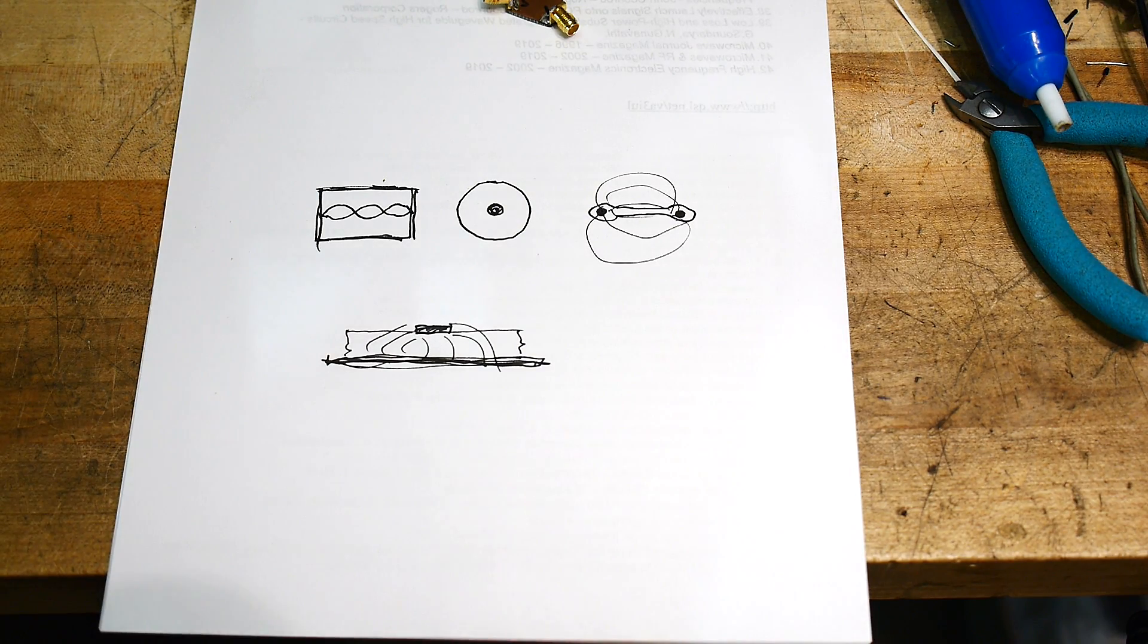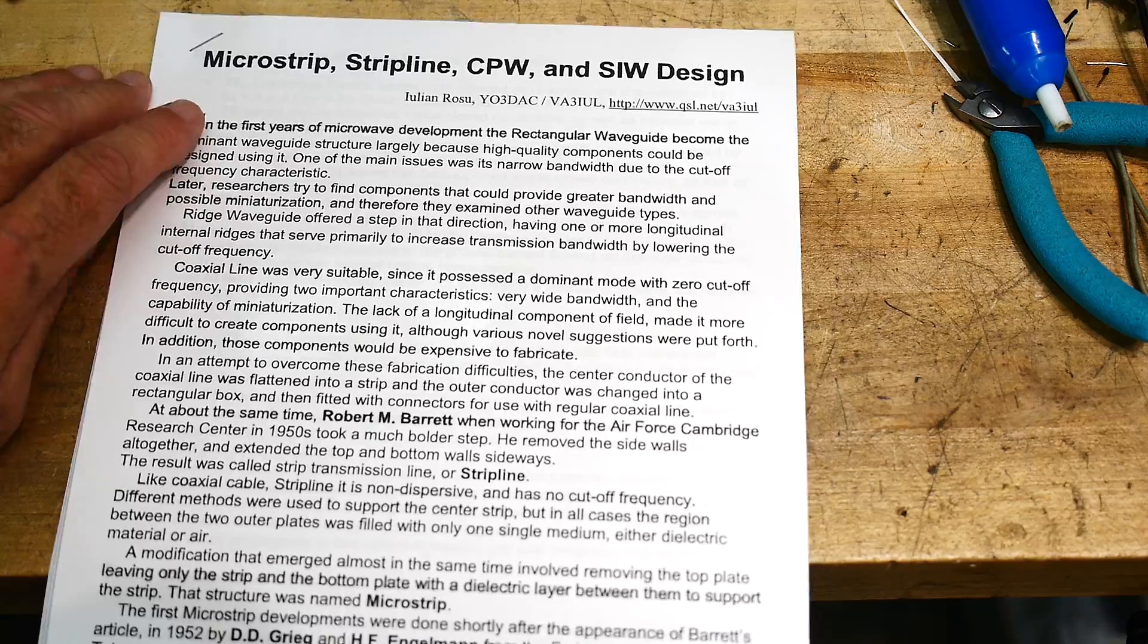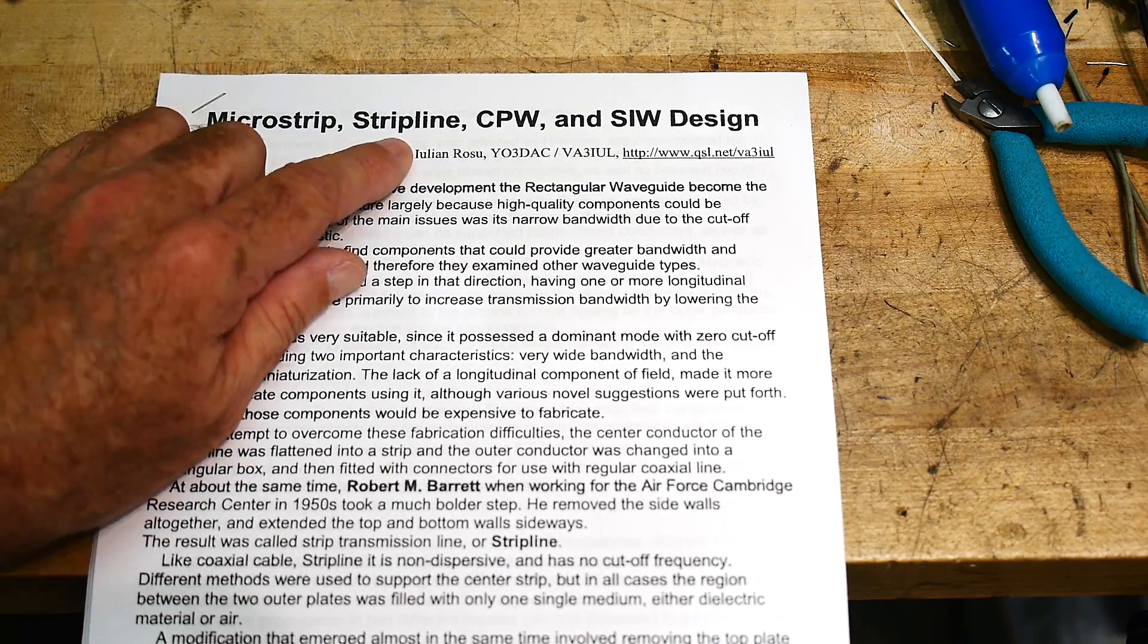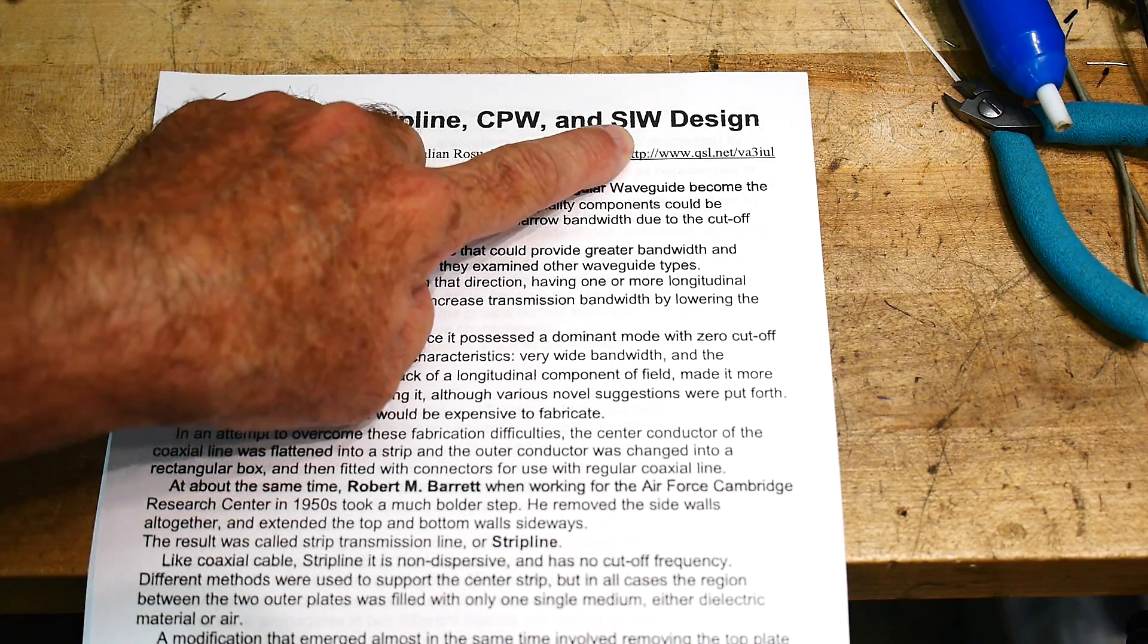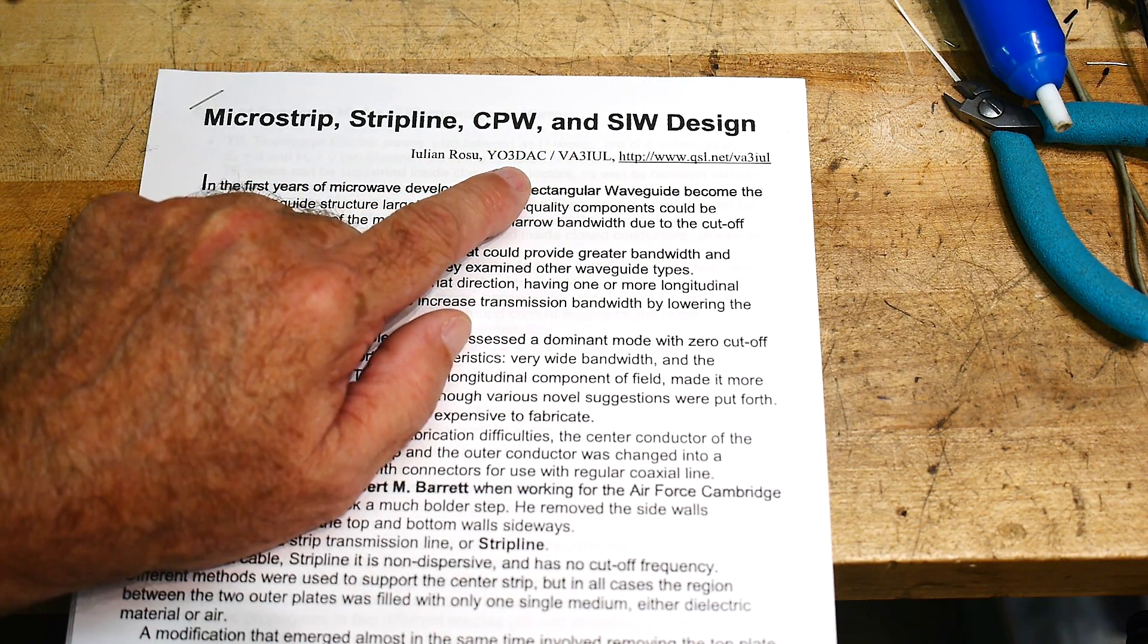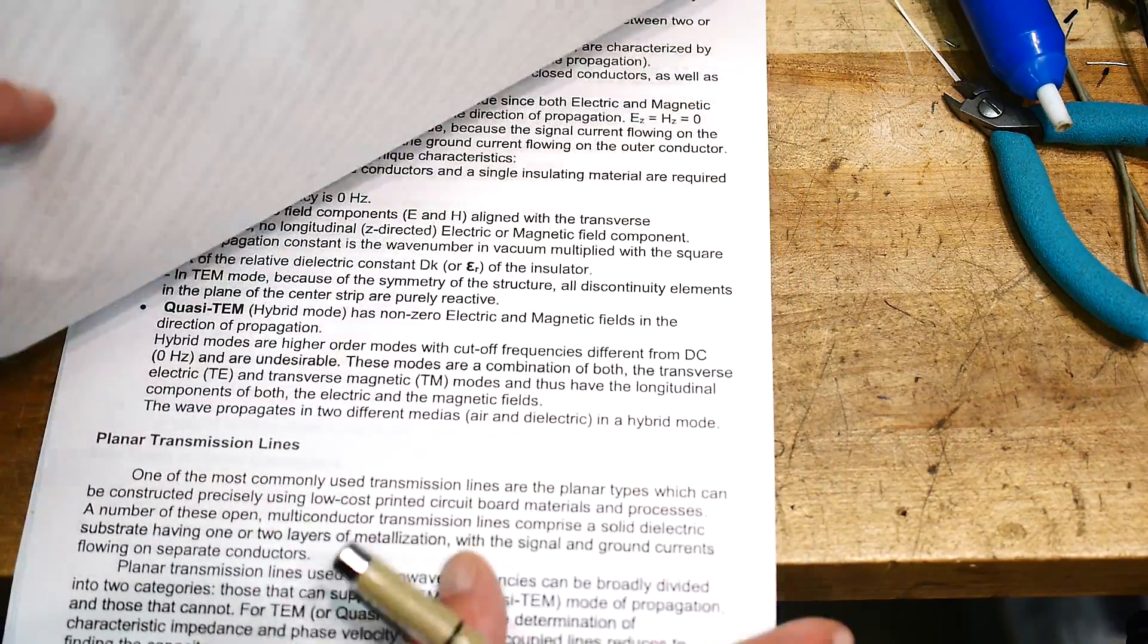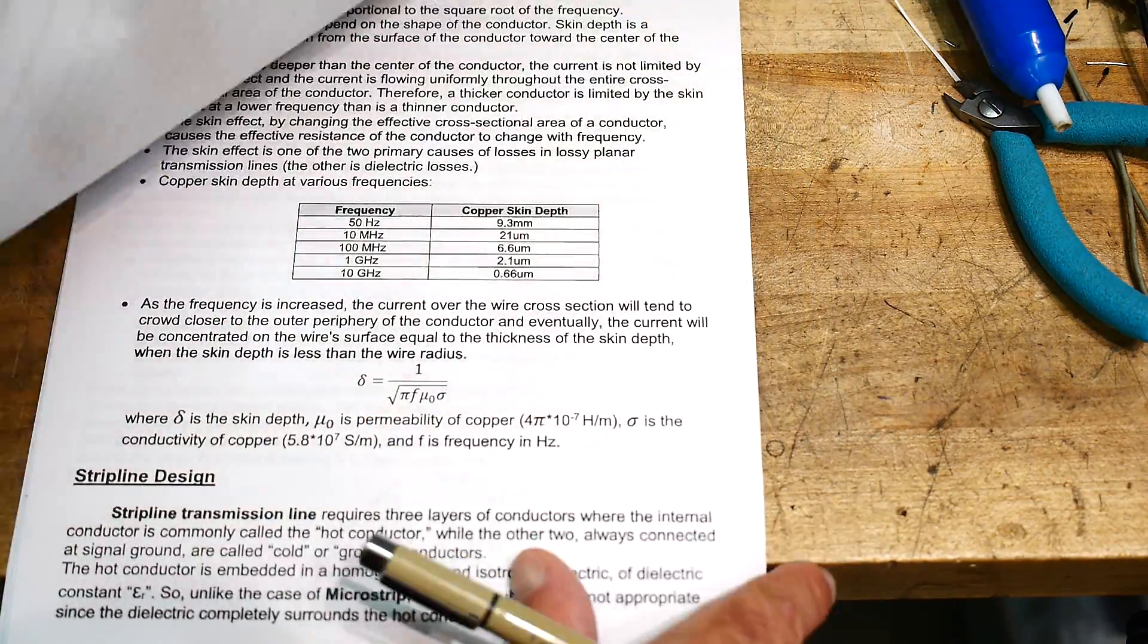And there's things called stripline and buried this or that. Anyway, I found a nice reference, oh, I'm drawing on it, called Microstrip, stripline, CPW, and SIW designs made by some ham radio operators. And this, I guess, was published in QSL net.